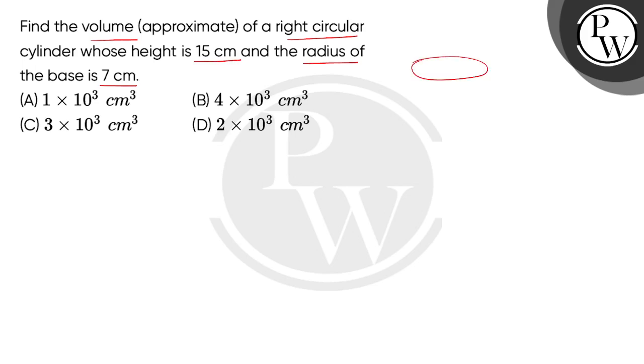So children, here we have to consider a right circular cylinder. This is the base, this is the radius, and this is the height h. So given है हमें h की value 15 cm और radius of base गिवन है 7 cm और हमें find करना है इस cylinder का approximate volume.